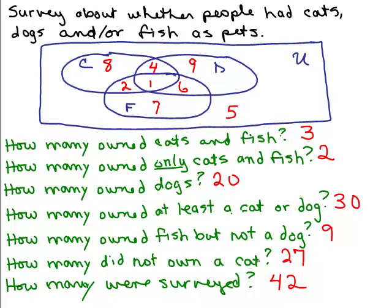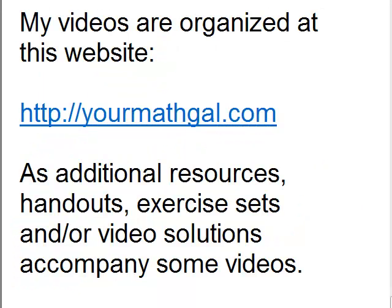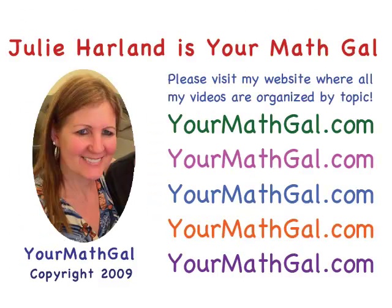So that's how you read the information from a Venn diagram. We'll eventually be getting to a problem where I give you a bunch of clues and you have to fill out a Venn diagram to answer questions like how many were surveyed. Make sure you look at all the rest of the examples — I've got at least five in this series. Please visit my website at yourmathgal.com where you can view all of my videos organized by topic.